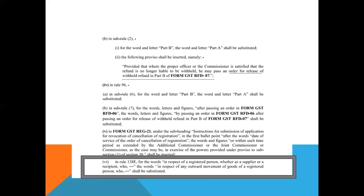Coming to the change in Rule 138E: Rule 138E used to impose a restriction on furnishing of information in Part A of the GST e-way bill in respect of a registered person, whether as a supplier or a recipient, who has not furnished the return for a certain period — the Part A of the e-way bill was blocked. But now there is a change in these wordings. Earlier the wordings were 'whether as a supplier or a recipient'; now these wordings have been changed to 'in respect of any outward movement of goods of a registered person.'